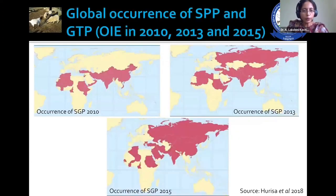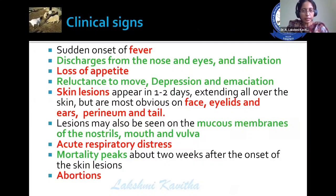This is the global distribution of sheep pox and goat pox in 2010, 2013, and 2015. You can appreciate the increased spread of this infection over that period.